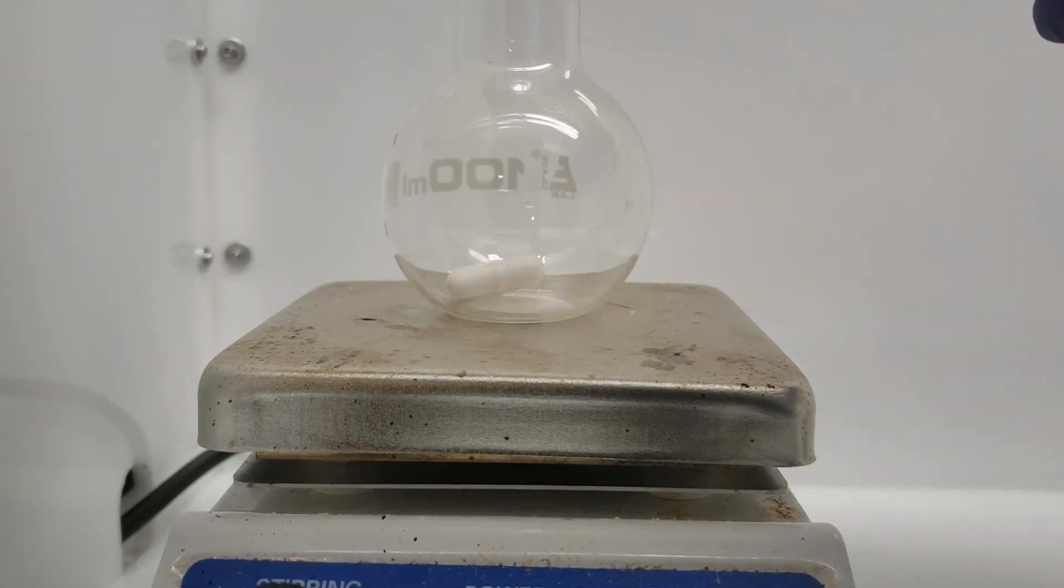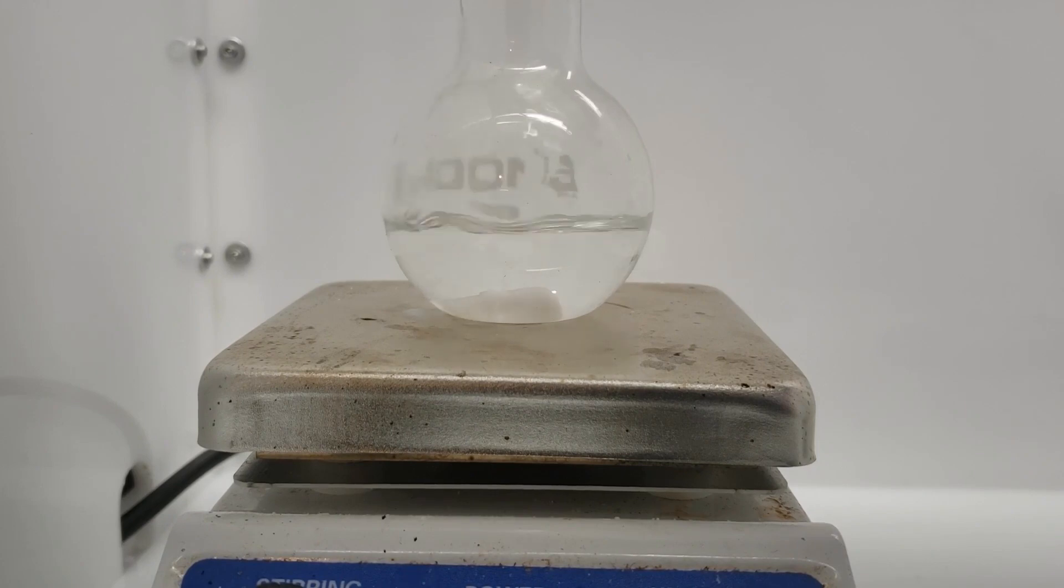Next, 15 milliliters of 20% hydrochloric acid was measured out and added to a 100 milliliter round bottom flask, and then the Praseodymium metal chunks along with it.